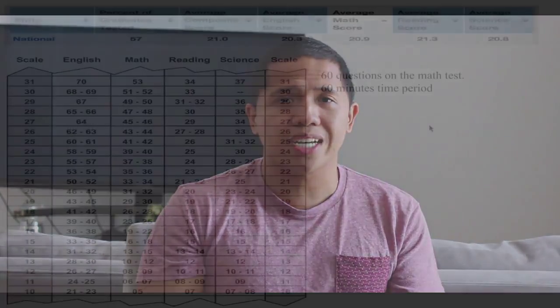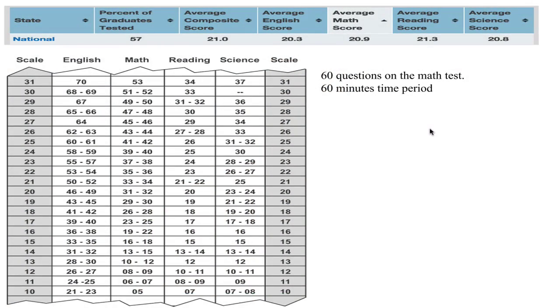Let me show you some charts, some graphs, some online sources that you can check out. This first slide comes straight from Google, which shows the national average in 2014 for the math part of the ACT, which is a 20.9.